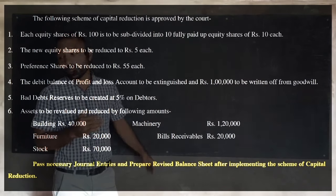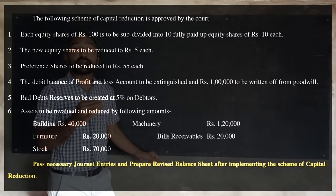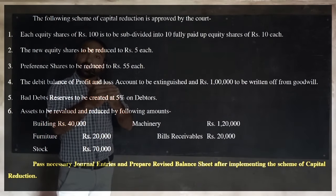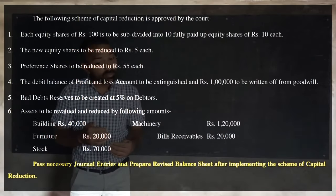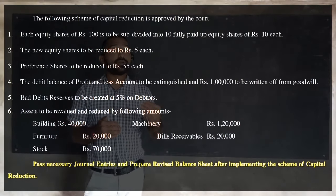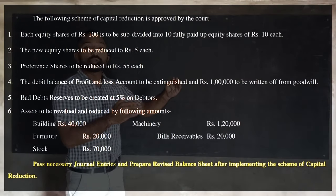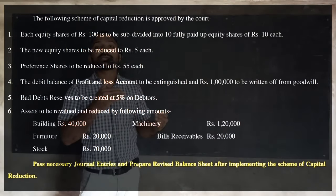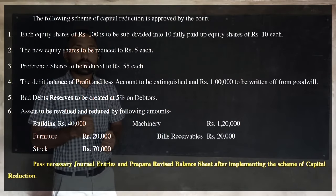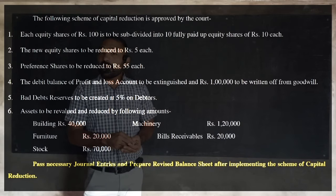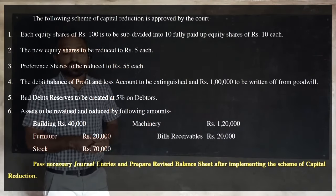For preference shares: we are given 5,000 preference shares of rupees 100 each, rupees 90 paid up. The reduction brings them down to rupees 55, meaning from 90 we reduce to rupees 55. So there is a reduction of rupees 35 per share in preference share capital. The debit balance of profit and loss account is to be extinguished, and rupees 1 lakh is to be written off from goodwill. A bad debt reserve is created at 5% on debtors, and assets are revalued with given reductions.